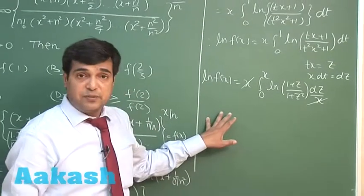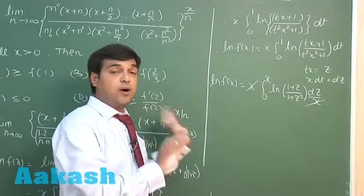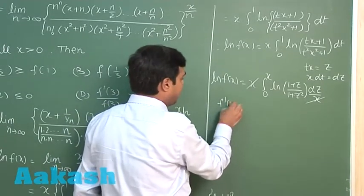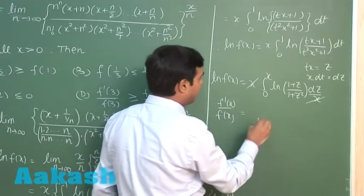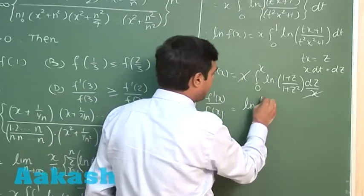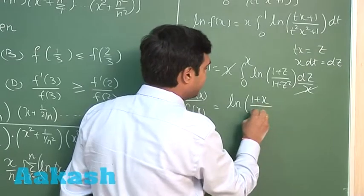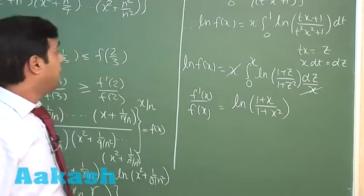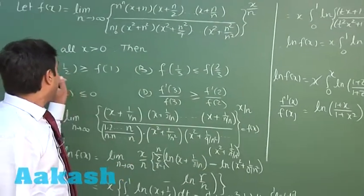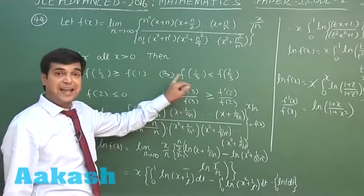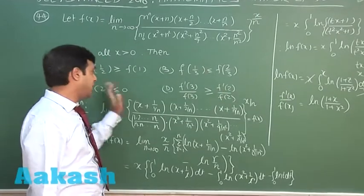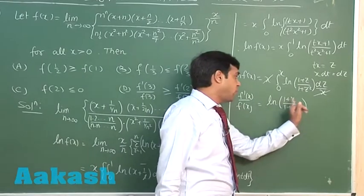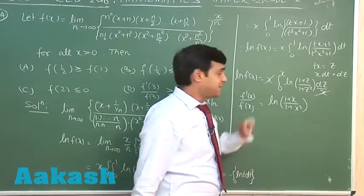Differentiating both sides with respect to x, we obtain f'(x)/f(x) = log[(1 + x)/(1 + x²)]. We need to analyze the options involving f(1/2), f(1), f(1/3), f(2/3), f'(2), and f'(3)/f(3) vs. f'(2)/f(2).